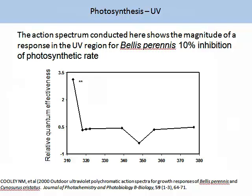Here is another example of an action spectrum — this one is of a response of the plant Bellis perennis, commonly known as daisy. On the axis you have relative quantum efficiency and wavelength. This action spectrum shows a 10% inhibition of photosynthetic rate at wavelengths of radiation in the UV spectrum. This demonstrates that light can not only promote photosynthesis, but certain regions of light can inhibit photosynthetic rate. This is important in agriculture to understand how light can alter photosynthetic rates.